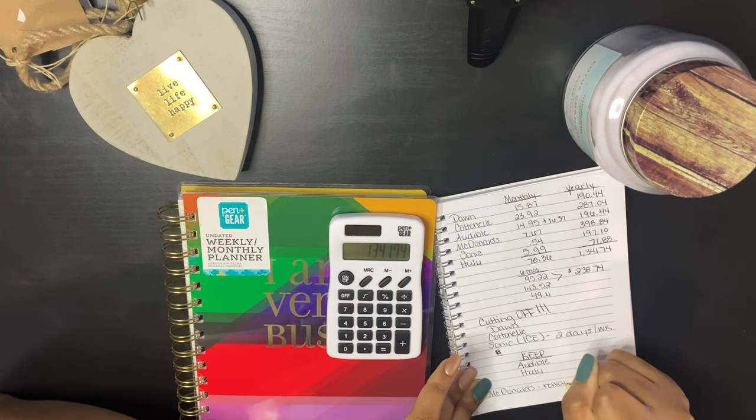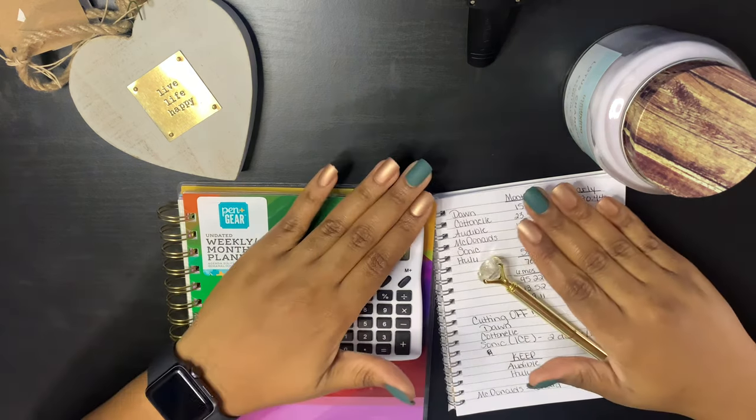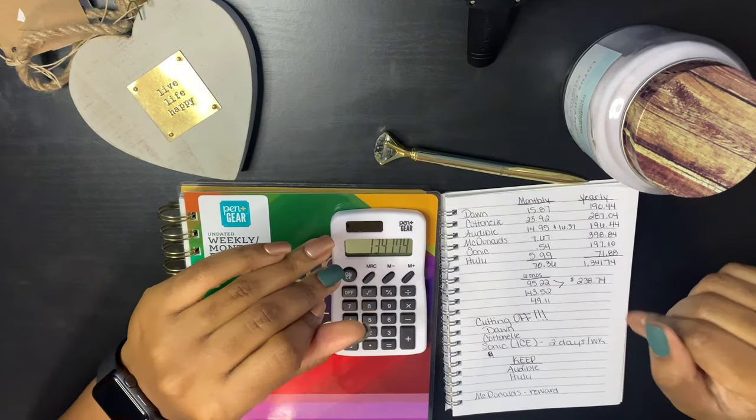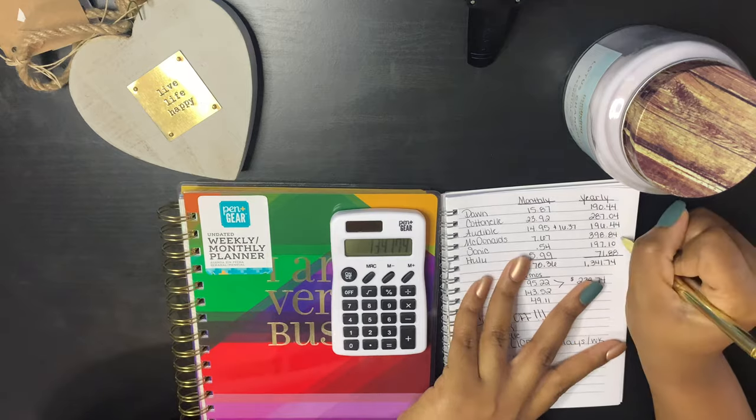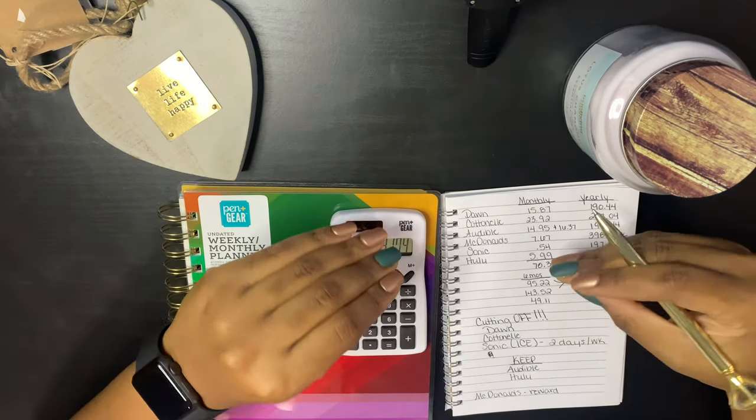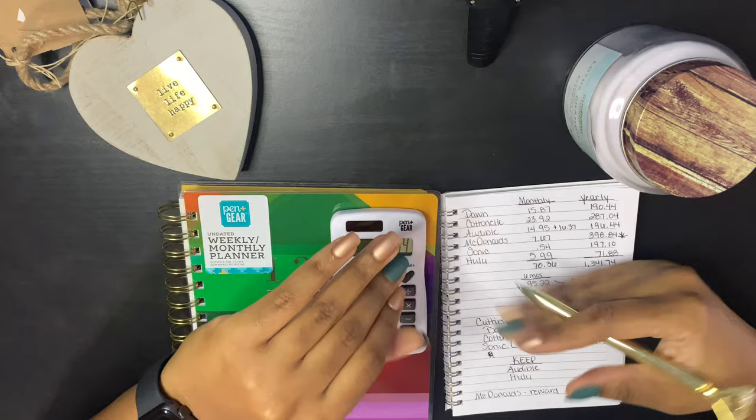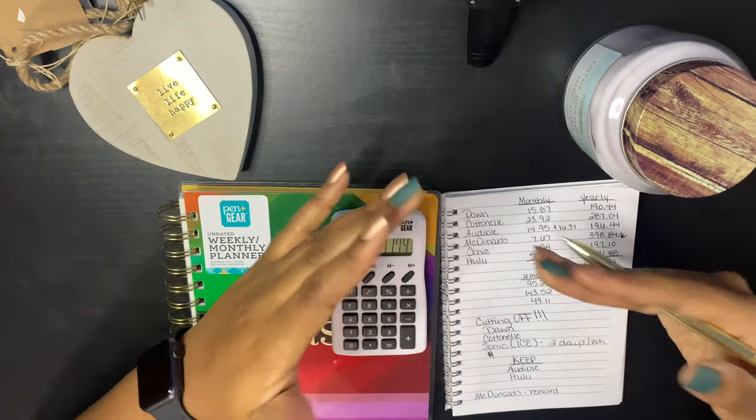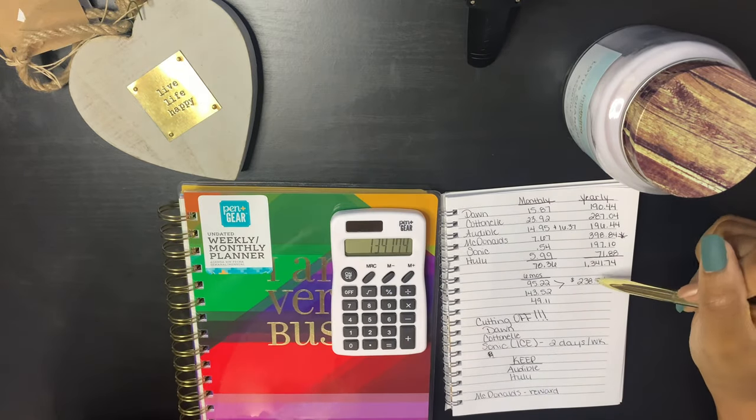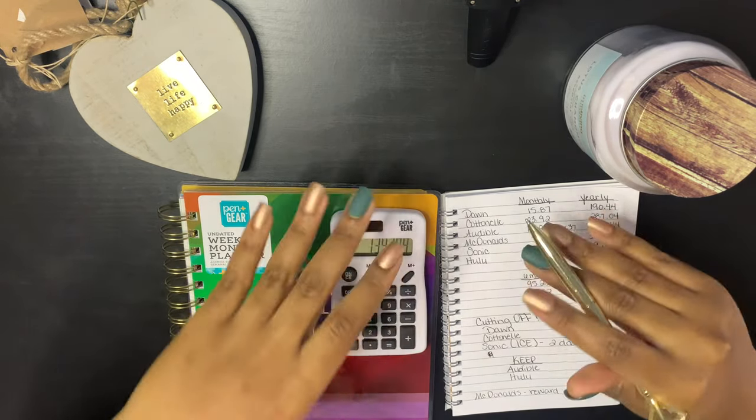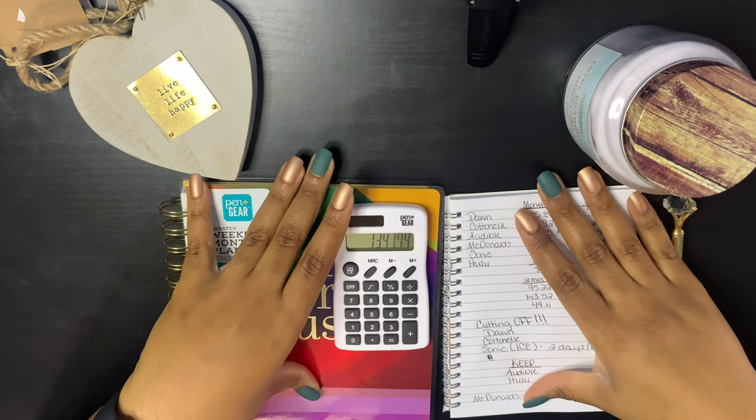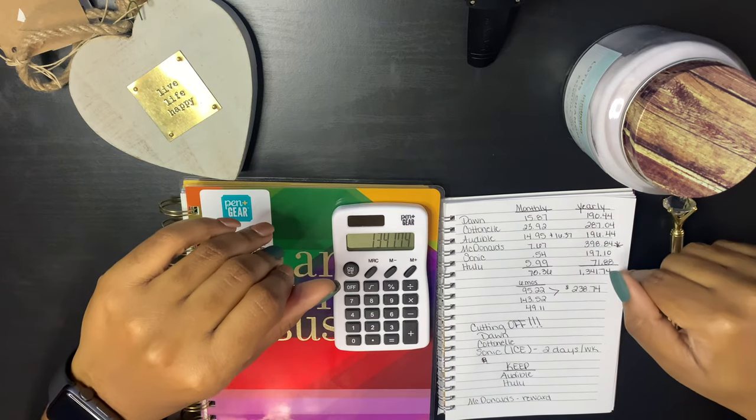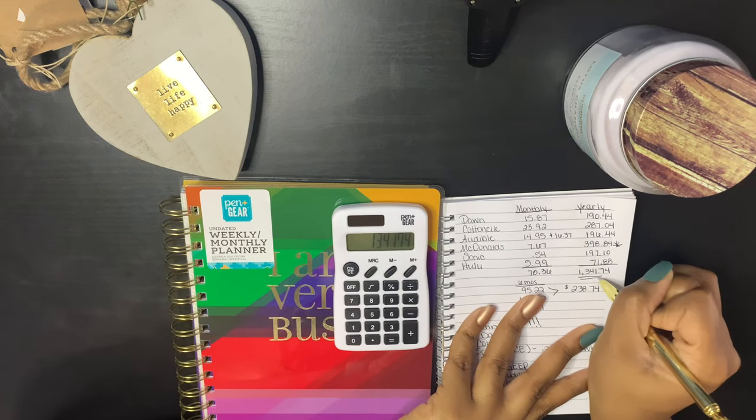McDonald's will be a reward. Now that might hurt her little heart, but I'm pretty sure she would like this right here to be put towards something else, like little lady put her phone in the water so she needs a new phone. So I'm pretty sure she would want that to go toward it. Y'all, do y'all see these numbers? None of this is a necessity and it's over a thousand dollars.